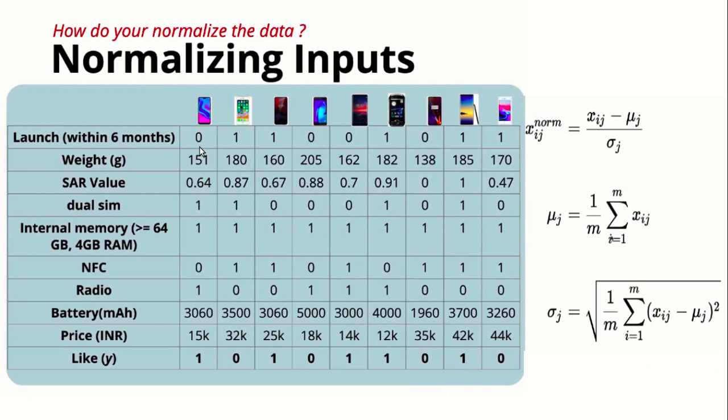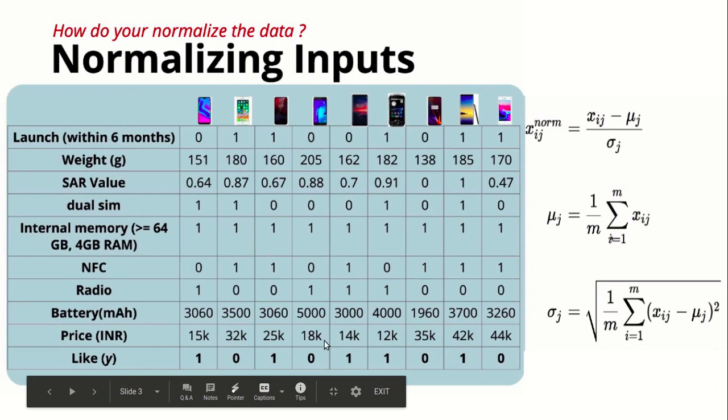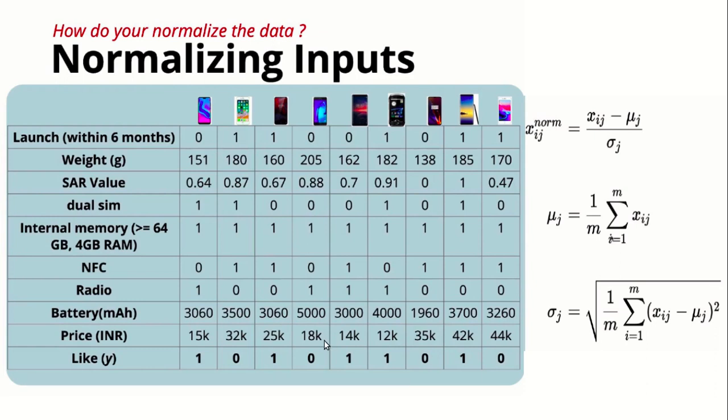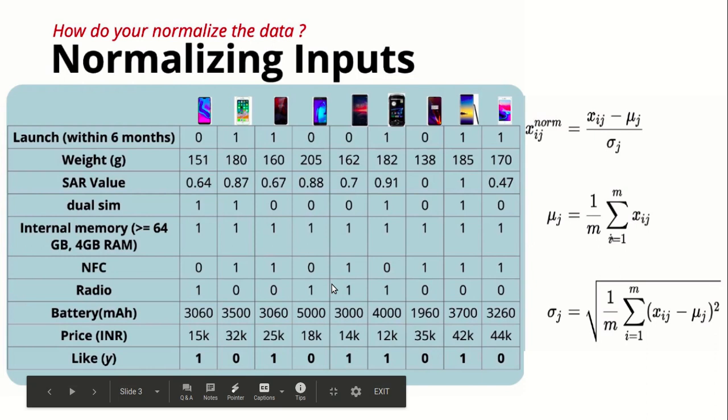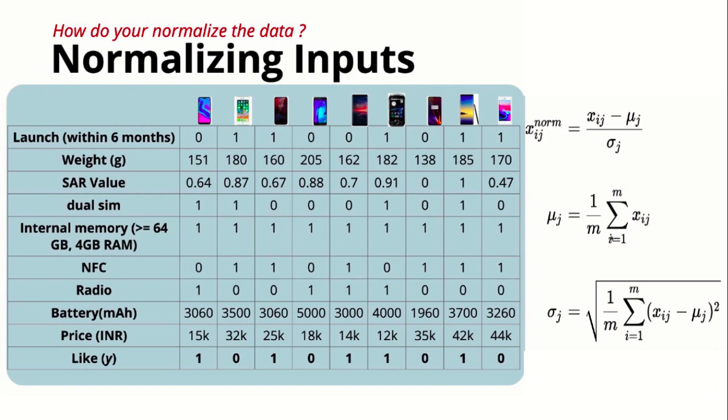These are all the features X₁₁, X₁₂, X₁₃ - launched within six months, weight, and so on. We can observe that all the features vary between different ranges. You can see this is a binary value, this looks like it belongs to 100 to 200 range, this value is very high, and this is price. So we have different ranges for each feature. Before feeding